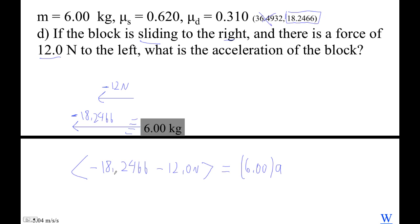Negative 18.2466 plus negative 12 divided by 6. I get negative 5.04 meters per second squared.